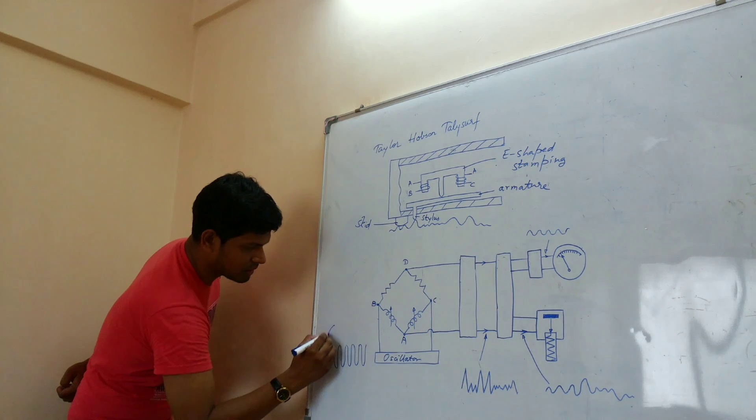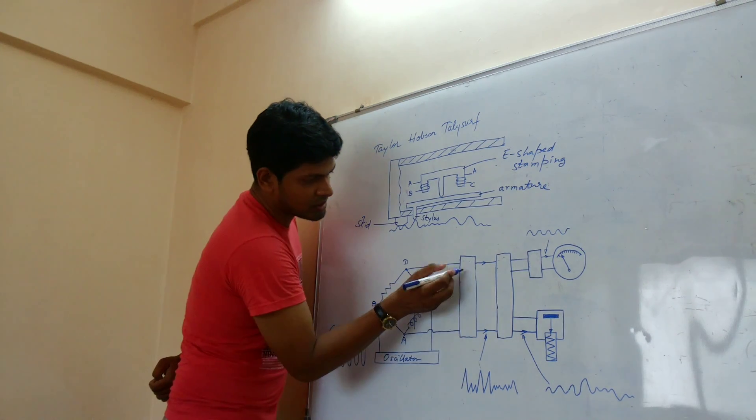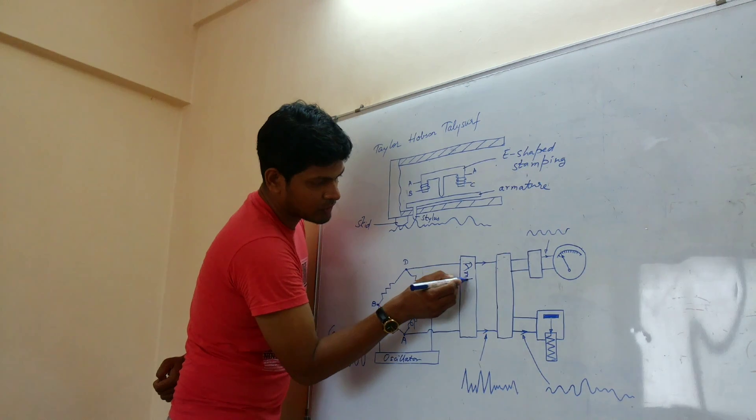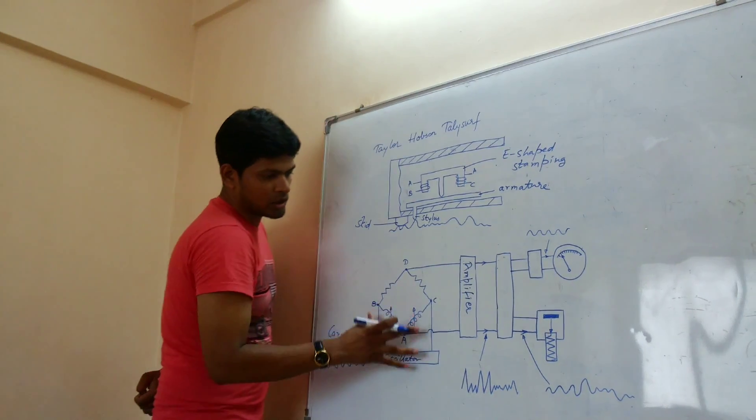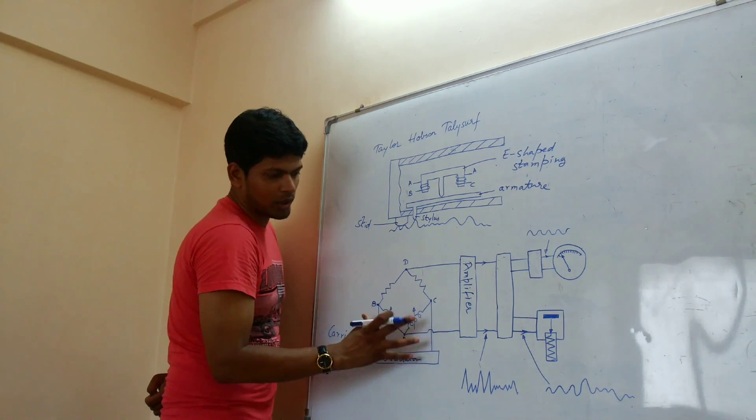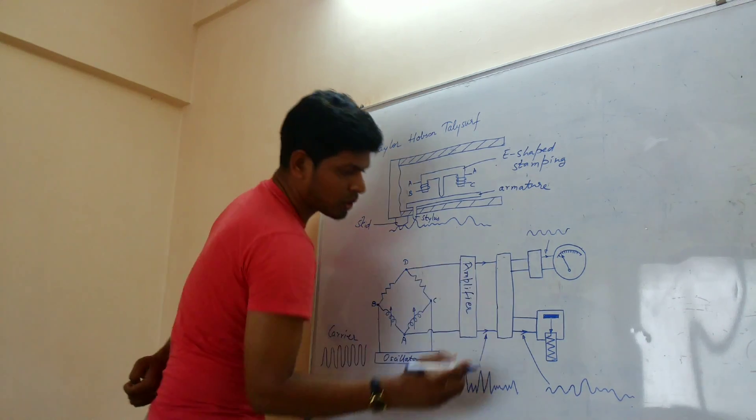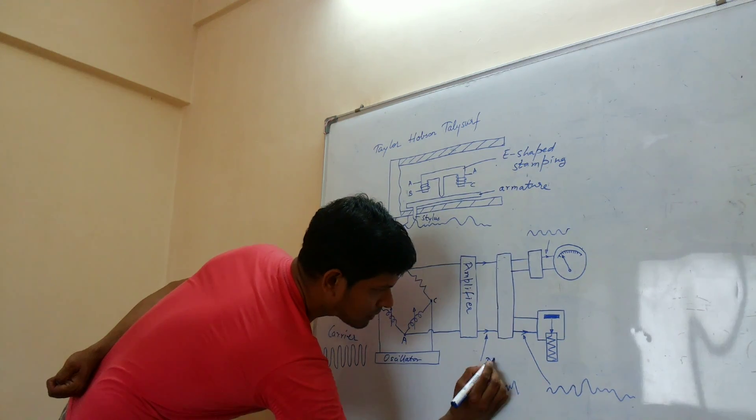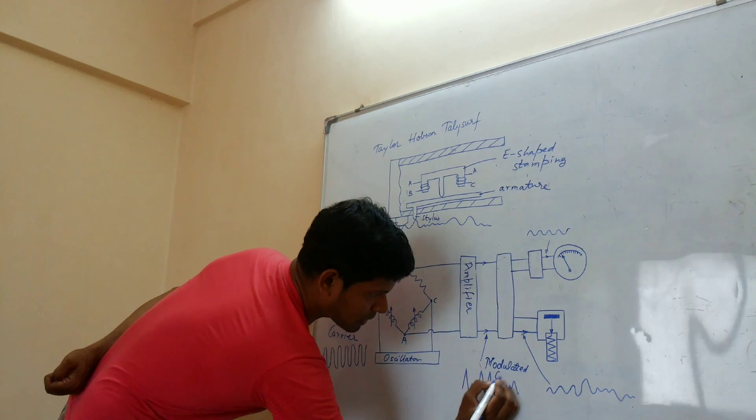And this is the carrier or the signal. And this is amplifier. When the carrier or the signal whatever is generated gets amplified. And you can have the modulated or varied carrier.